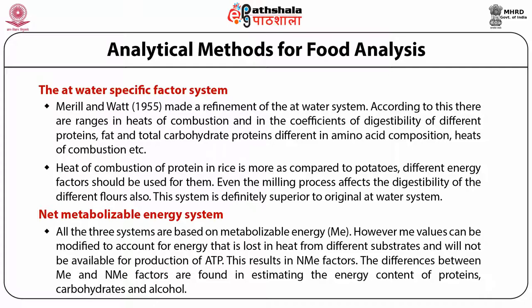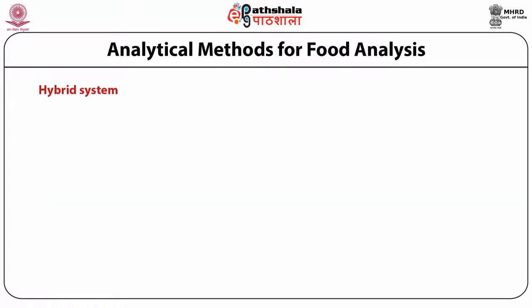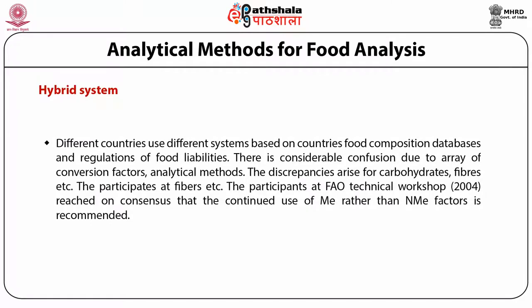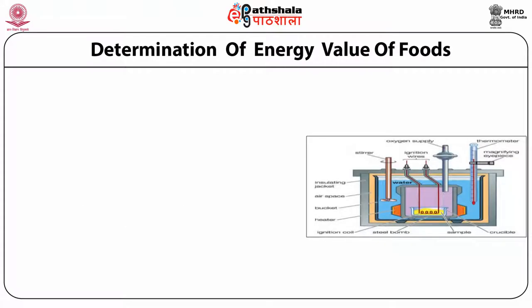The next is the hybrid system. Different countries use different systems based on their food composition databases and regulations of food labeling. There is considerable confusion due to the array of conversion factors as well as analytical methods. The discrepancies arise for carbohydrates, fibers, etc. The participants at the FAO technical workshop 2004 reached a consensus that continued use of the ME rather than the NME factors is recommended.